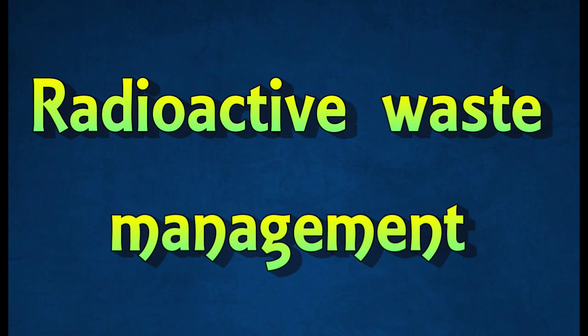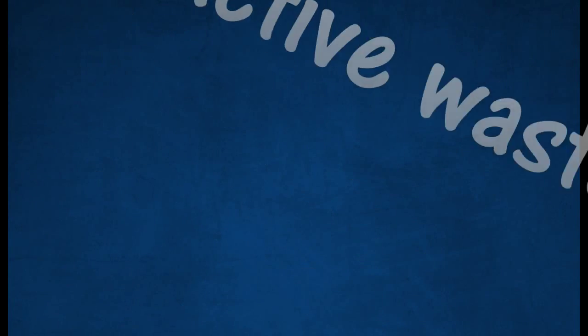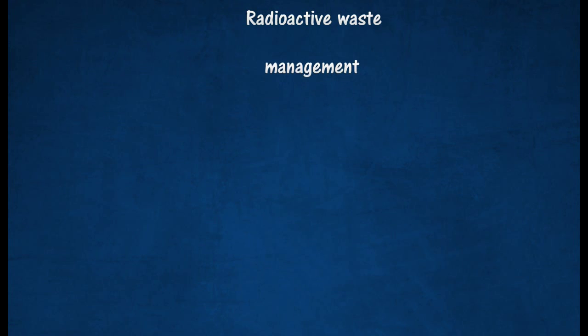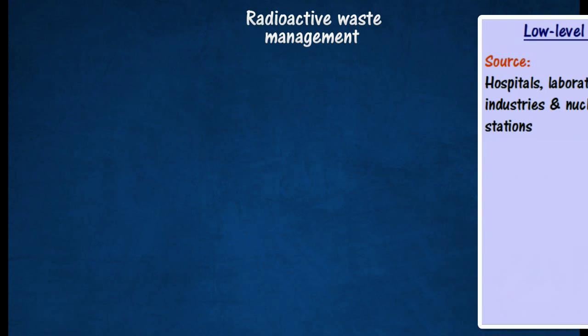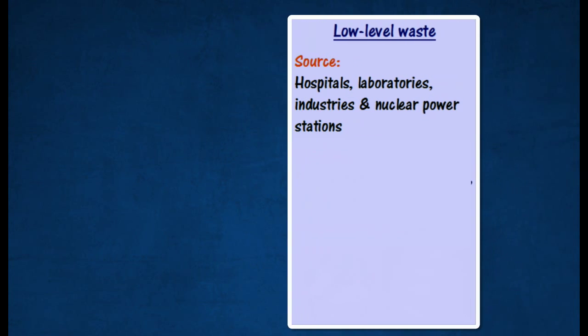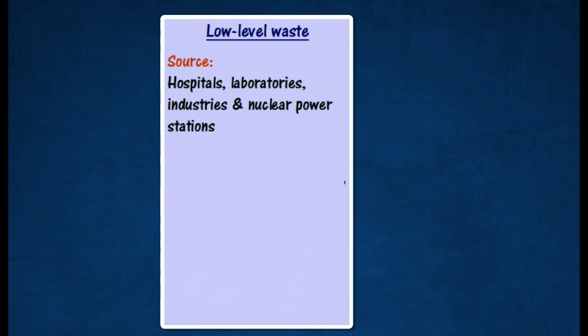Radioactive Waste Management. Radioactive decays produce the remaining isotopes known as radioactive wastes. Radioactive waste can be classified into three categories: low-level, intermediate-level, and high-level waste. Low-level waste is generated from hospitals.